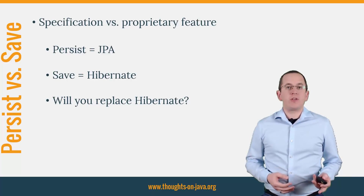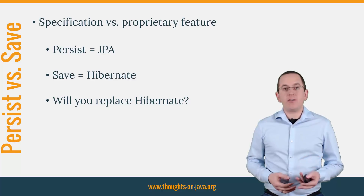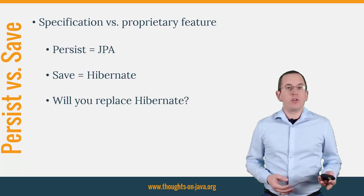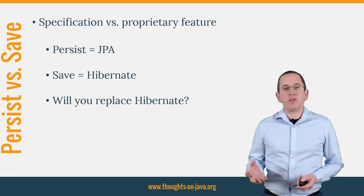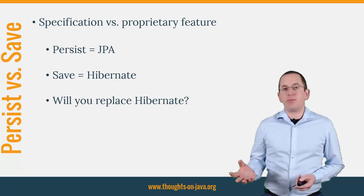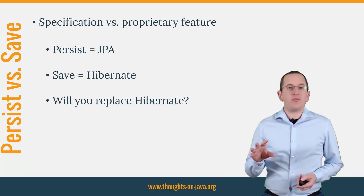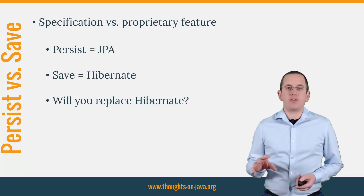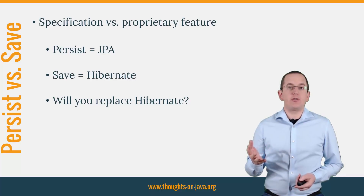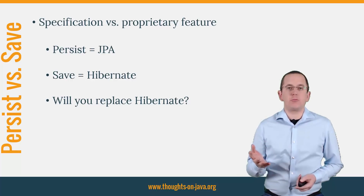The most obvious difference is that the JPA specification defines the persist method. You can use it with all JPA implementations. The save method, on the other hand, is Hibernate specific. It is therefore not available in other JPA implementations. But that's only relevant if you want to be able to replace Hibernate with another JPA implementation like EclipseLink or OpenJPA.